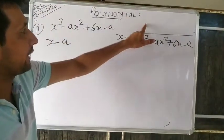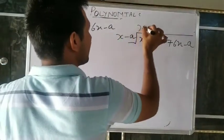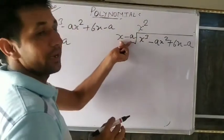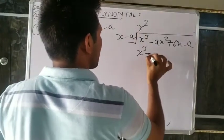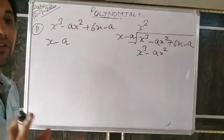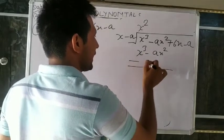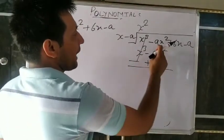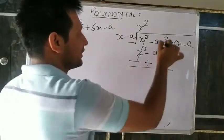Think: what number do we write in the quotient such that when we multiply it by x it becomes x³? So x³ divided by x gives x². Write x² in the quotient. Multiply x² by (x−a): x² times x gives x³ (positive into negative gives negative), and x² times (−a) gives −ax². Always we change the sign.